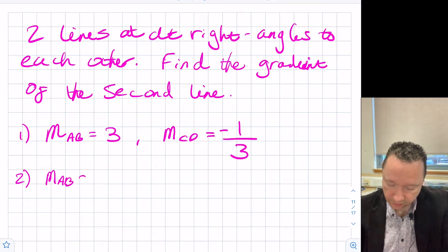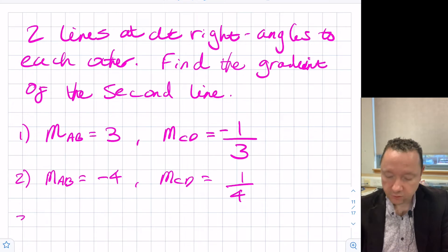Let's take a different example. If I had MAB was equal to negative four, then the gradient of CD is going to be a quarter. That's not going to be negative because the first one's already negative.